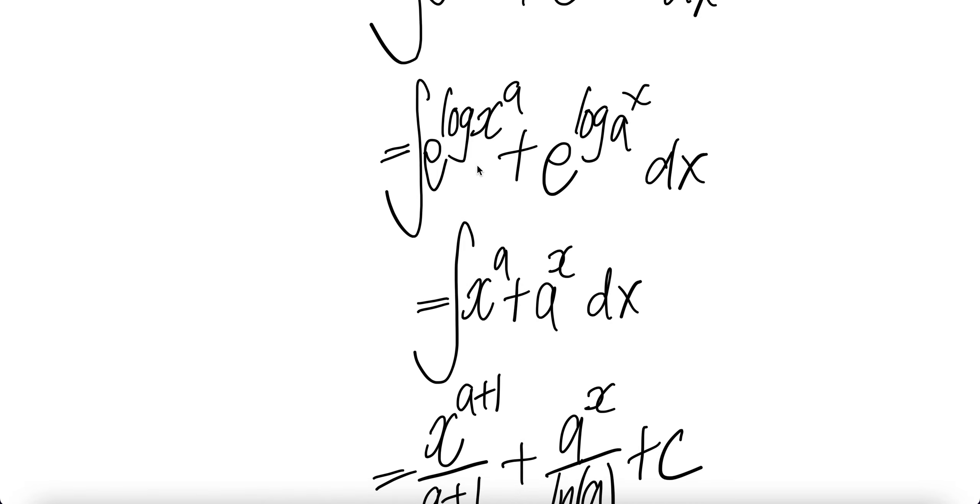Log without anything here means log to the base e or ln. When you have e to the power ln of x to the power a, these things cancel. You get x to the power a down here. Do the same here. Cancel to get a to the power x.